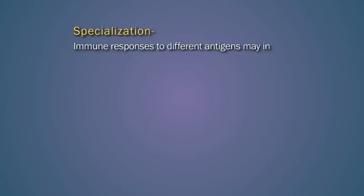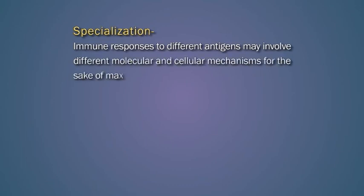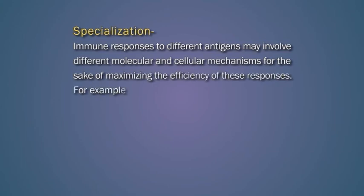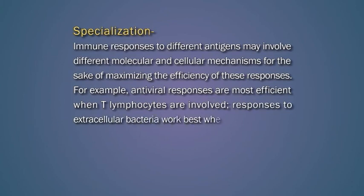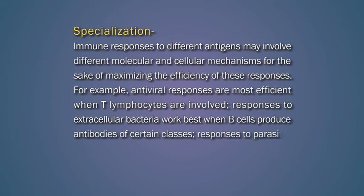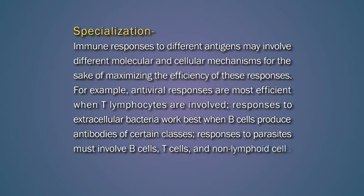The next feature is specialization. Immunological responses to different antigens may involve different molecular and cellular mechanisms for the sake of maximizing the efficiency of these responses. For example, antiviral responses are most efficient when T-lymphocytes are involved. Responses to extracellular bacteria work best when B cells produce antibodies of certain classes. Responses to parasites must involve B cells, T cells, and non-lymphoid cells called eosinophils.